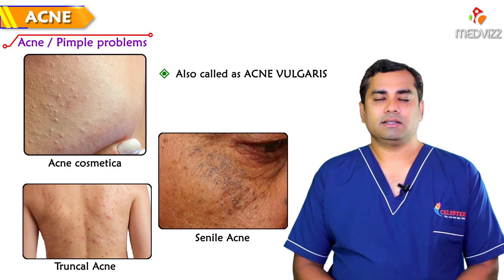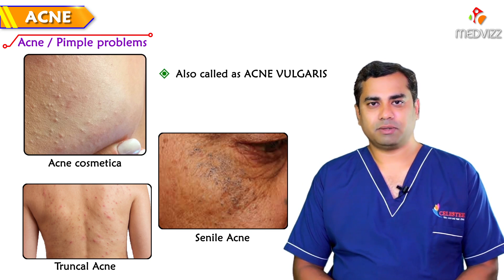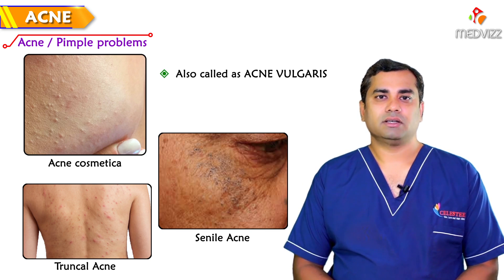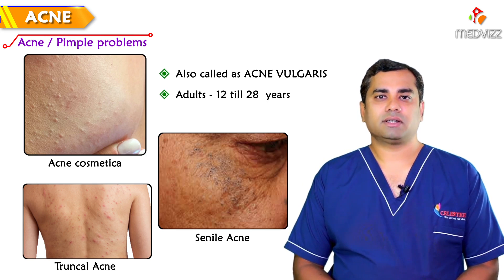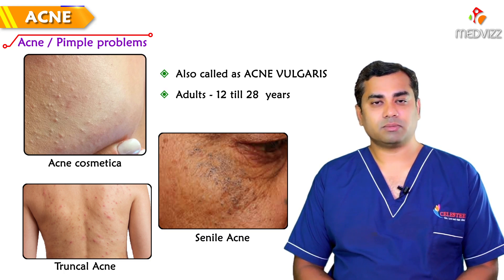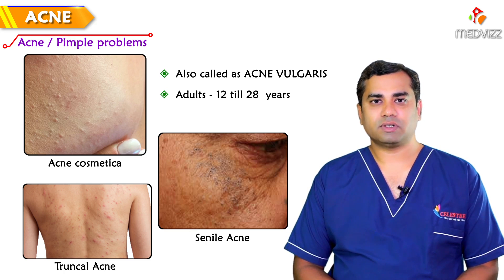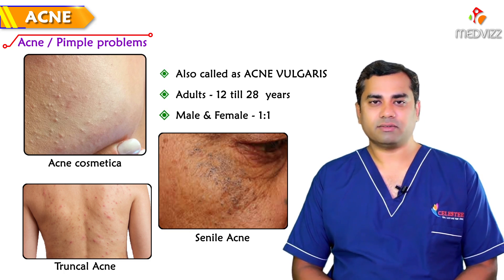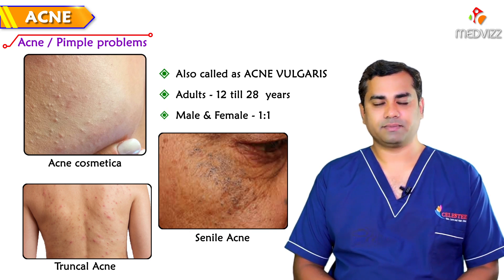Acne is called acne vulgaris when it happens commonly. Usually this is seen in adolescents, especially above the age of 12 years and can go on up to the age of 28 years as well. This can have an equal proportion of affliction in both male and female — the male to female ratio is 1 to 1.